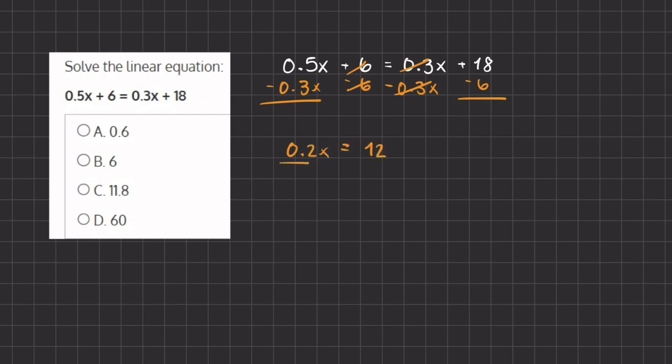Now in order to isolate this x, we are going to divide 0.2 on both sides. So we are left with x equals 12 divided by 0.2. Now instead of dividing by a decimal, we can convert this 0.2 to a fifth, which is the same value.